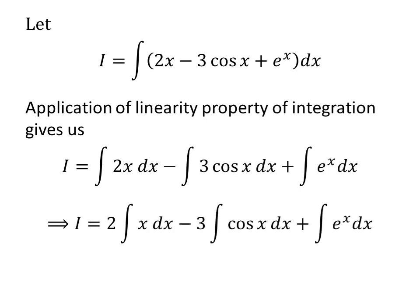Taking out the constant, we get I is equal to 2 times integral of x with respect to x minus 3 times integral of cosine of x with respect to x plus integral of exponential of x with respect to x.